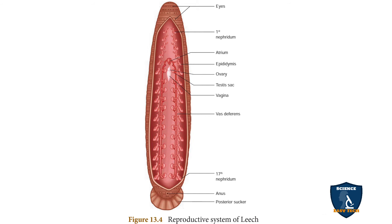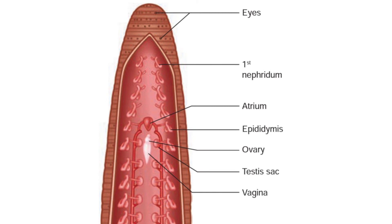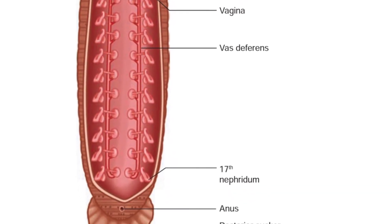Looking at the diagram, the first five segments are left off. You can see the atrium with the penis and ejaculatory duct, the epididymis which stores the sperms, and the testes sac where the testes is seen. You can also see the vas deferentia and 11 pairs of testes in the diagram.